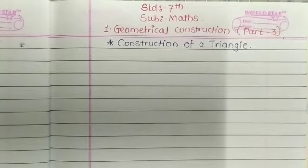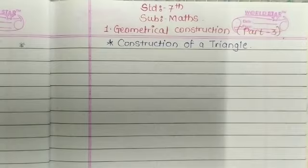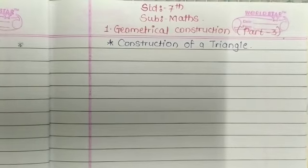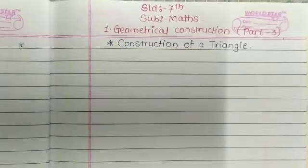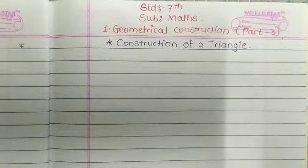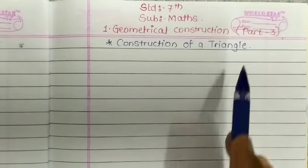Hello students, welcome to this video. Today we are going to learn geometrical construction part 3. In the previous video we learned about the properties of angle bisector and perpendicular bisectors of the sides of a triangle. Now today we are going to learn construction of a triangle, so we are going to learn how to make a triangle.